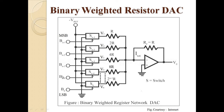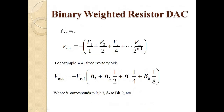So the V_out formula for a 4-bit converter becomes: V_out = −V_ref × (B3 + B2/2 + B1/4 + B0/8). What we have done is taken V_ref common and assigned the binary weightage to each bit's fraction. B3 corresponds to the most significant bit, B2 to bit 2, B1 to bit 1, and B0 to the least significant bit.